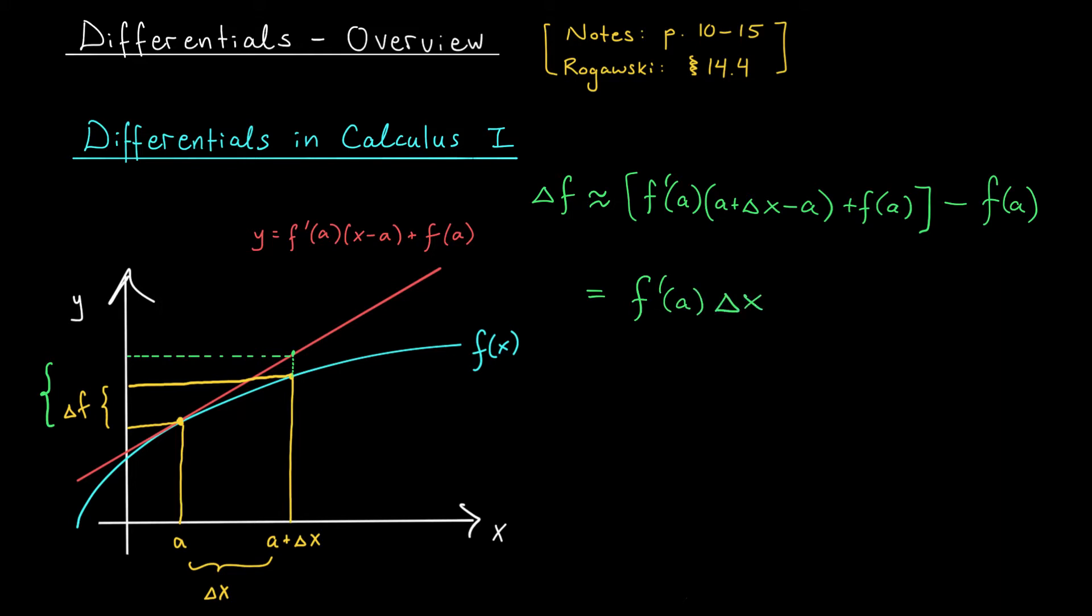Now, of course, this approximation is really only meaningful when the change in our inputs delta x is quite small. In fact, we often denote this by dx, which we refer to as the differential of x. It's just there to emphasize that the change in inputs is incredibly tiny. This entire quantity, f'(a) dx, is known as the differential of our function f, and it's denoted by df.